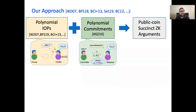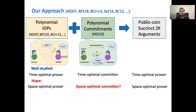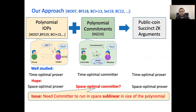This approach is not new to us and is a common denominator of a number of prior schemes. A time-optimal prover combined with a time-optimal committer indeed gives a time-optimal argument prover. Since we are also interested in space efficiency, it is natural to ask whether the same transformation preserves space. It turns out that this question is a bit more nuanced. To get a space-optimal prover for the argument, we would need a committer to run in space which is sublinear in the size of the polynomial, which is its input. This is clearly impossible for arbitrary polynomials.